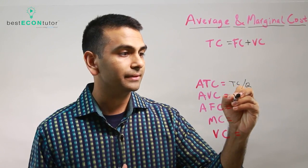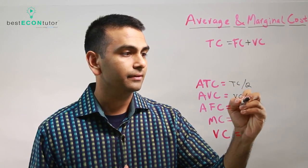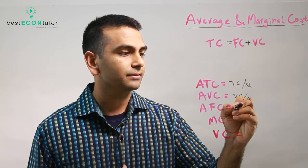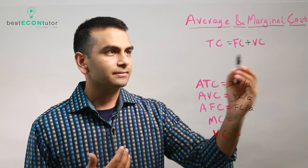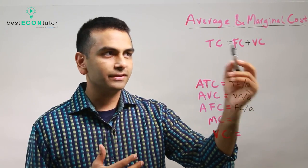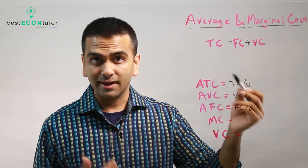Average variable cost, as you could probably guess, is VC over Q. And average fixed cost is FC over Q. So really, that's the thing about these, where for all these, the average is simply that divided by the quantity.